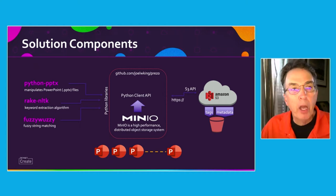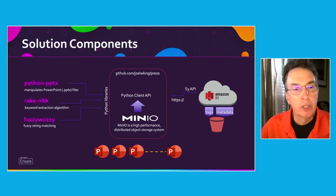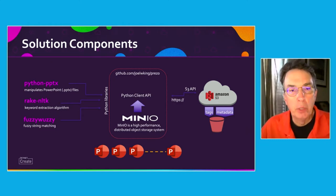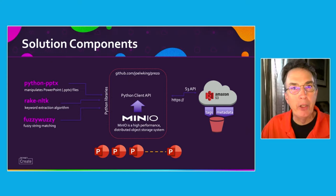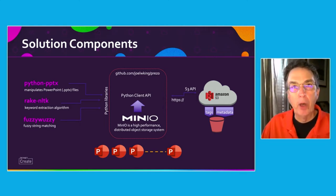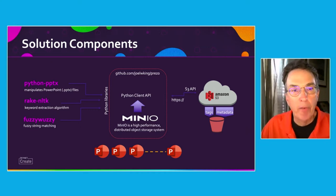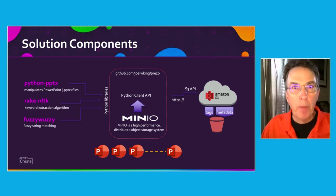The components we're going to use are a number of public source Python libraries: Python PPTX, which manipulates PowerPoint files; a RAKE algorithm to extract keywords from the data in those files; and a Python utility called FuzzyWuzzy for string matching. The core of all this is some code I've written that calls these libraries, and most importantly, the Minio Python API. Minio is a high-performance open source object storage solution that interfaces with Amazon S3 through the HTTP API, helping us find, search, retrieve, and share PowerPoint presentations.